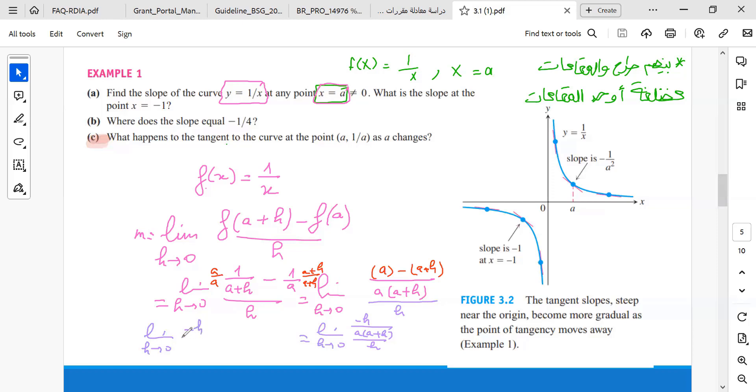We simplify. The limit H goes to 0: minus H over A(A + H) times 1 over H. We simplify and get minus 1 over A times A. Now we can compute the limit by substituting H by 0, which gives us minus 1 over A times A, which is minus 1 over A squared.